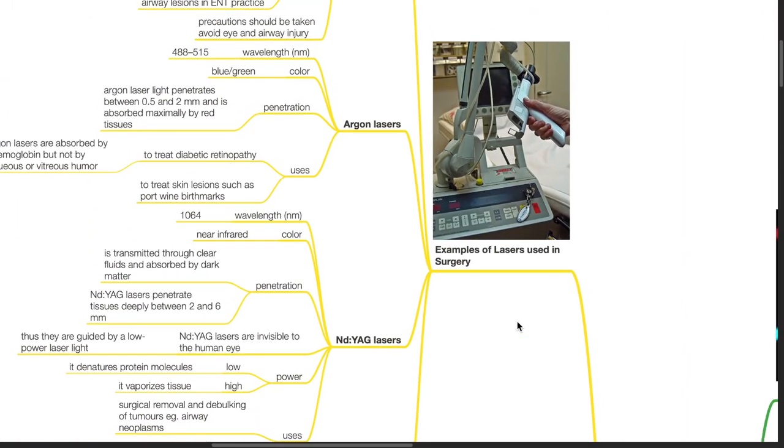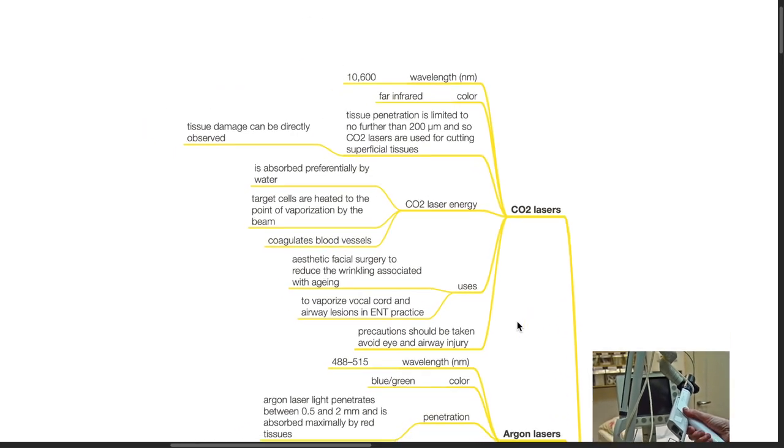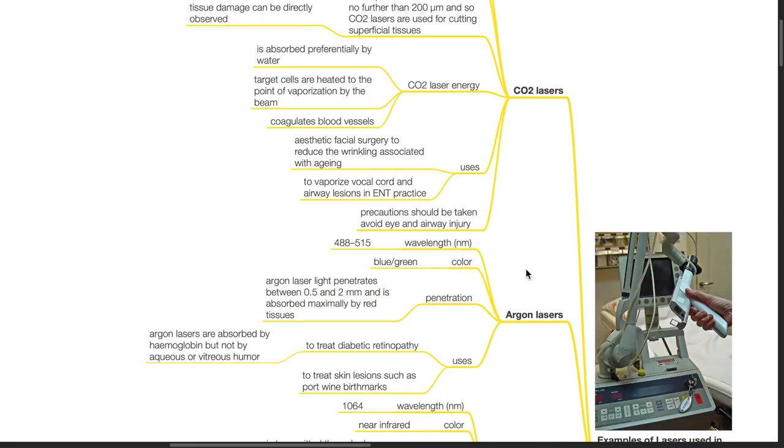Examples of lasers used in surgery. CO2 lasers uses wavelength of 10,600 nm. Color is far infrared. Tissue penetration is limited to no further than 200 µm and so CO2 lasers are used for cutting superficial tissues. Tissue damage can be directly observed. CO2 laser energy is absorbed preferentially by water. Target cells are heated to the point of vaporization by the beam. Blood vessels are coagulated. CO2 lasers are used during aesthetic facial surgery to reduce wrinkling associated with aging and to vaporize vocal cord and airway lesions in ENT practice. Precautions should be taken to avoid eye and airway injury.